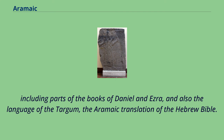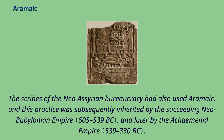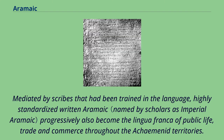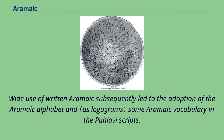The scribes of the Neo-Assyrian bureaucracy used Aramaic, a practice inherited by the succeeding Neo-Babylonian Empire and later by the Achaemenid Empire. Highly standardized written Aramaic progressively became the lingua franca of public life, trade, and commerce throughout the Achaemenid territories. Wide use of written Aramaic led to the adoption of the Aramaic alphabet and some Aramaic vocabulary in the Pahlavi scripts, which were used by several Middle Iranian languages.